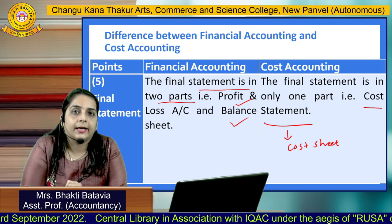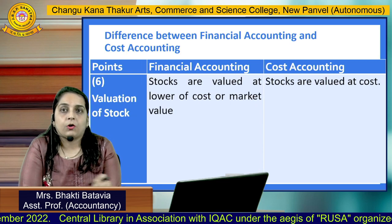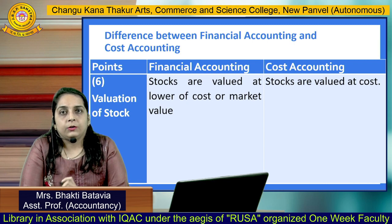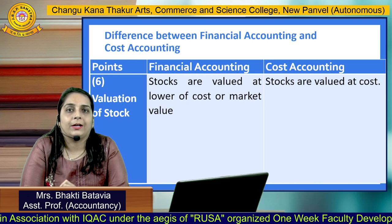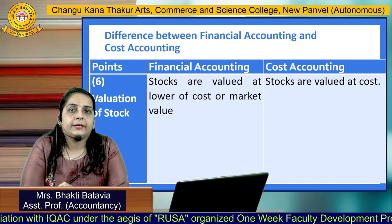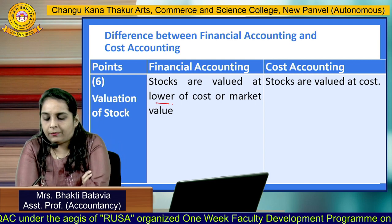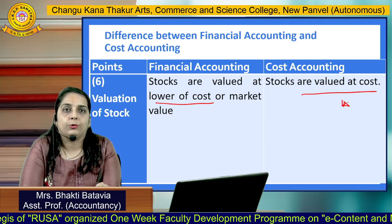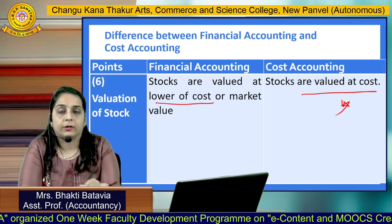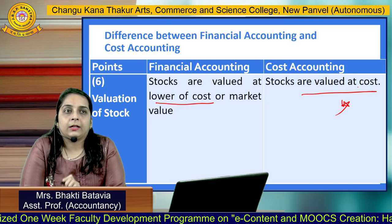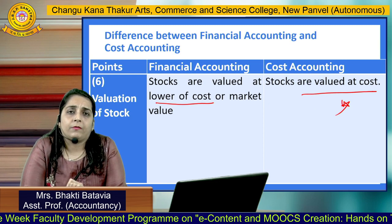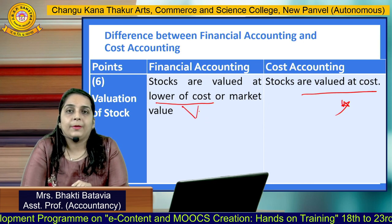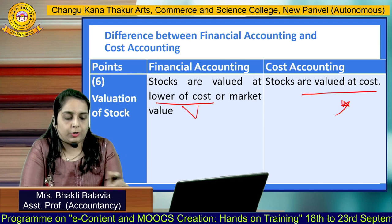Another comparison is stock valuation. In Financial Accounting, the valuation of stock is done at the lower of cost or market value. But in Cost Accounting, stocks are always valued at cost. Keep this in mind — because it is Cost Accounting, the stocks are always valued at cost, whereas in Financial Accounting, whichever value is lower will be considered.